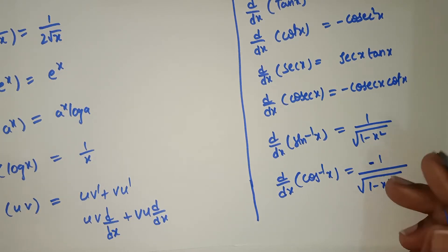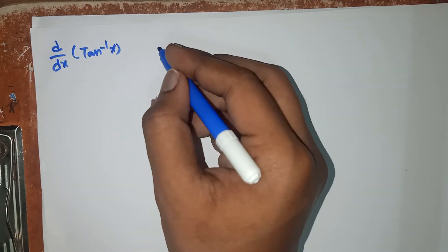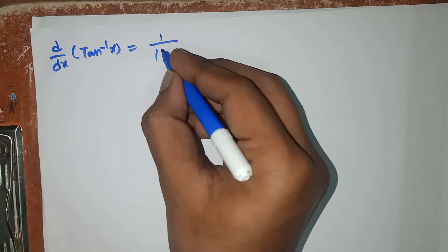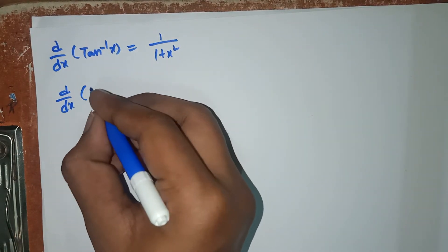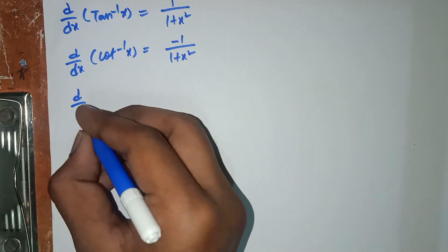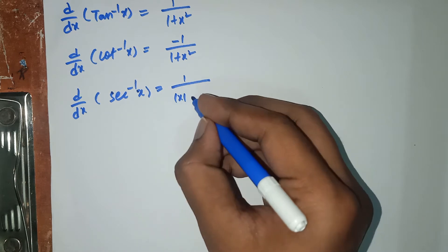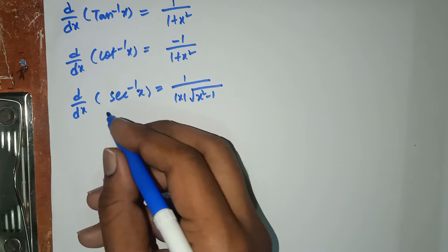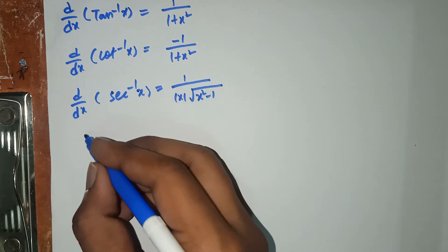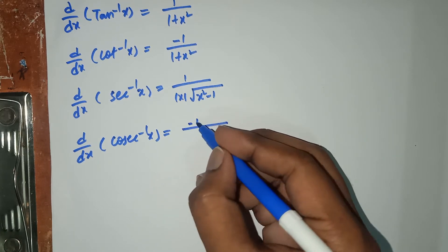In the same way, d by dx of tan inverse x equals 1 by 1 plus x square. d by dx of cot inverse x equals minus 1 by 1 plus x square. d by dx of secant inverse x equals 1 by mod x times root over x square minus 1. We use this formula very less, but you can remember it. d by dx of cosecant inverse x equals minus 1 by mod x root x square minus 1.